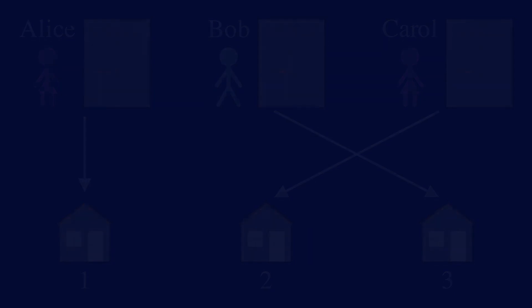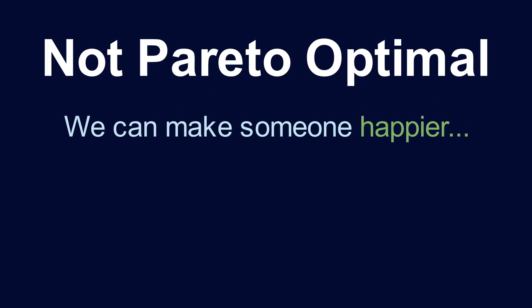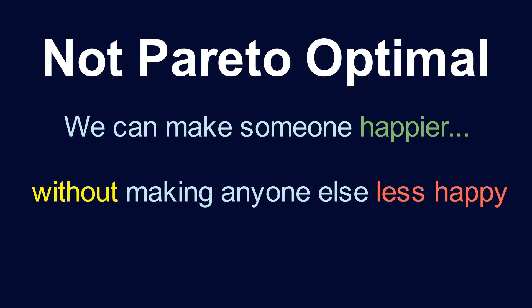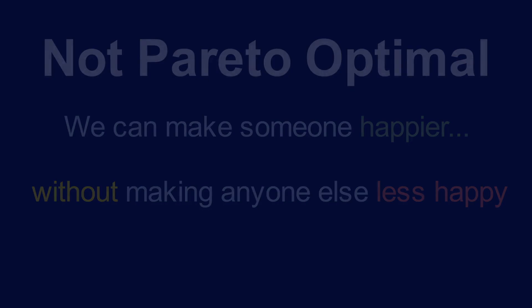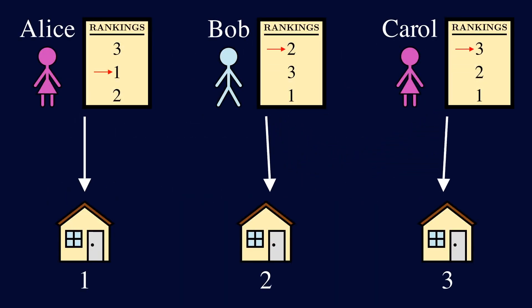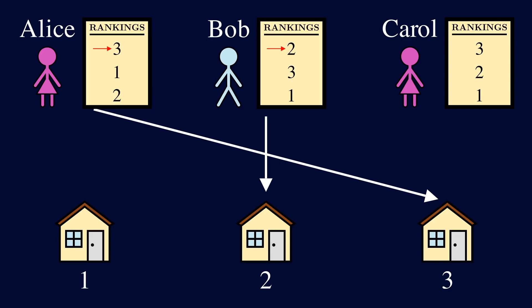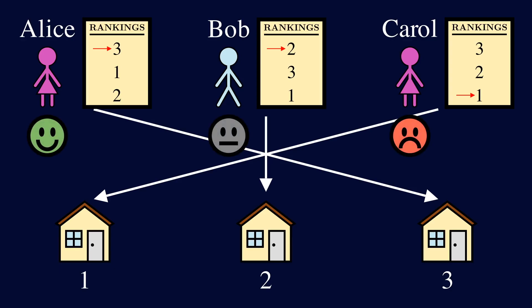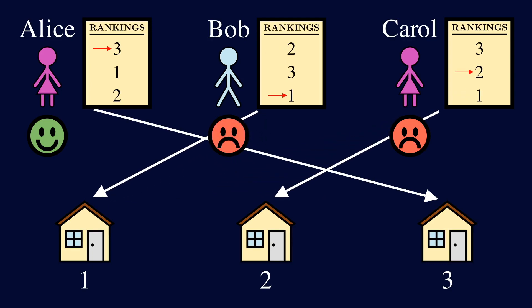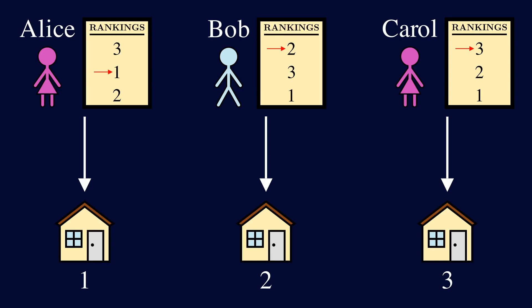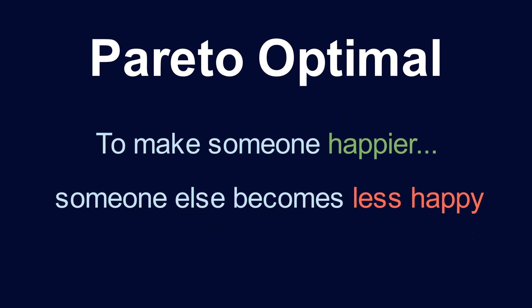Economists say this situation is not Pareto optimal, which is where we can make someone happier without making anyone else less happy. If we can make this happen, then why not do it? So this matching is clearly not optimal. But after swapping, the only person we can make happier is Alice, but to do that she would need to take Carol's assignment — then either Carol takes dorm 1, which makes her less happy, or Bob takes dorm 1 and Carol takes dorm 2, which makes both Bob and Carol less happy. So Alice's happiness comes at the expense of someone else. That's the definition of Pareto optimal.